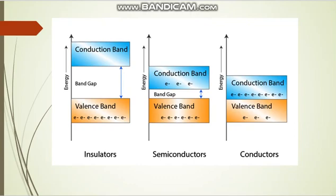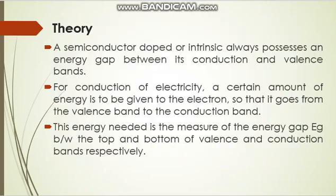In contrast, conductors have a positive temperature coefficient of resistivity property — if you raise the temperature, resistivity increases in conductors due to scattering phenomena, and their conductivity decreases. In this experiment, we are selecting a semiconductor in the form of a p-n junction diode. A pure semiconductor is used to prepare a p-type semiconductor and an n-type semiconductor by adding some impurities.